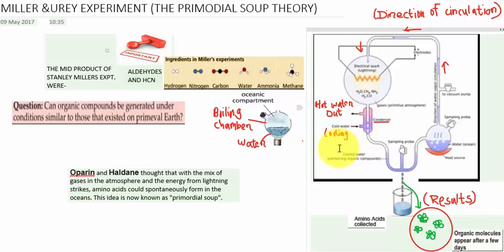The idea is to test the reducing atmosphere by creating an oceanic component and an atmospheric chamber, and providing lightning strikes so that amino acids could probably generate.